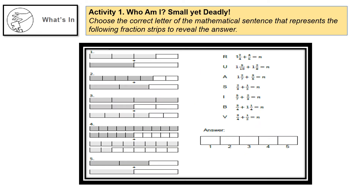Under 'What's In' in your module, there is Activity 1. The title is 'Who Am I? Small Yet Deadly.' You have to choose the correct letter of the mathematical sentence that represents the following fraction strips to reveal the answer. There are fraction strips for numbers 1 up to number 5.